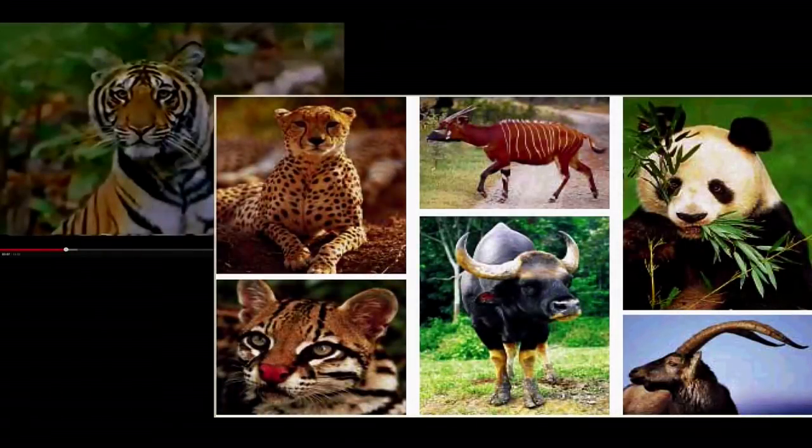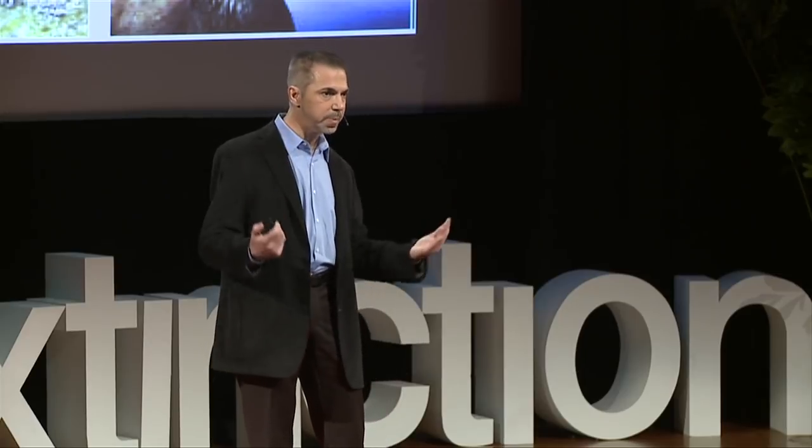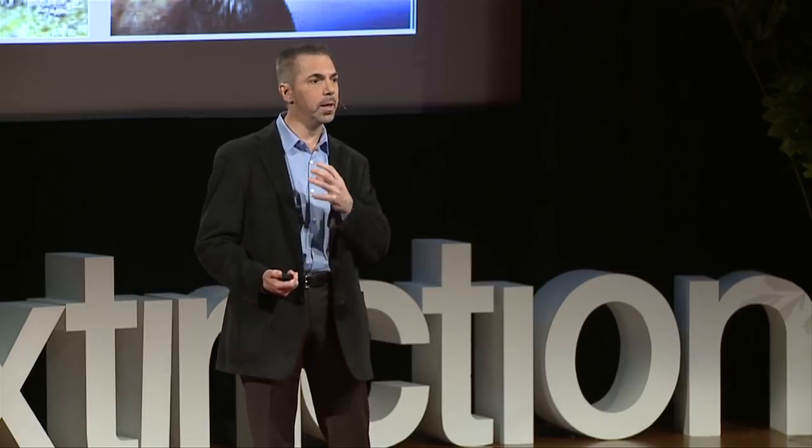There are two types of cloning: interspecies and intraspecies. With intraspecies, you use the egg and the cell from the same species you want to clone. With the cross-species approach, you can take the egg of one species to clone the cell from another. That's very important if you want to resurrect extinct animals or clone endangered animals.